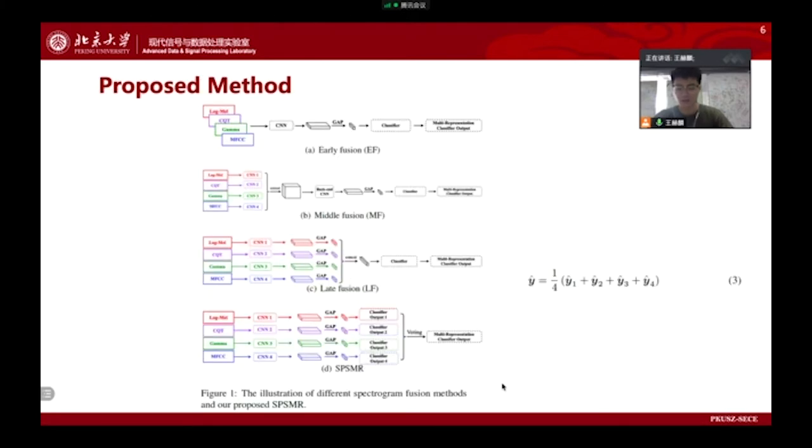Instead of inputting single representation to the networks, multiple representations can obtain more robust information from the raw audio. Four types of spectral representations, i.e., LogMel, CQT, Gammatone, and MFCC are used in our experiments.